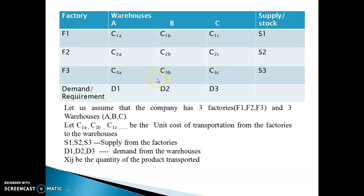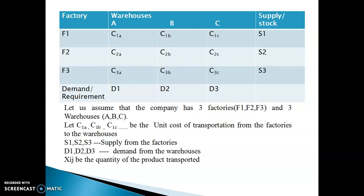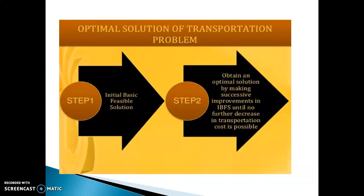Now what are the constraints? The supply from factory F1 is S1 only. That means the total units transported from F1 to all warehouses must equal S1: X11 plus X12 plus X13 equals S1. Similarly for factory F2: X21 plus X22 plus X23 equals S2. These are the supply constraints. Similarly, we have demand constraints. The total demand at warehouse A is D1, so X11 plus X21 plus X31 equals D1. We can write similar demand constraints for the other two warehouses. This is how we formulate the transportation problem into a linear programming problem.